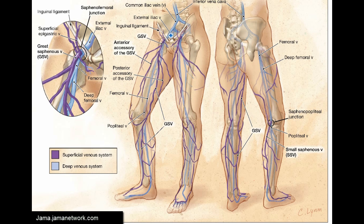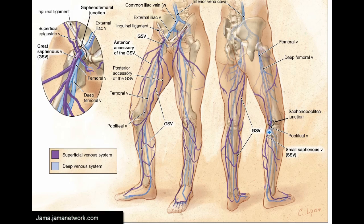We're going to look at the external iliac vein and then the femoral vein once it crosses the inguinal ligament. Of particular importance is going to be the junction of the greater saphenous vein, which is not a deep vein — it's a superficial vein — but this is an area where you can get thrombus more commonly. We're going to look at the femoral vein in high, medium, and low positions, and then we're going to look at the popliteal vein for evidence of DVT.